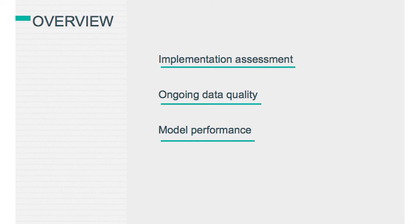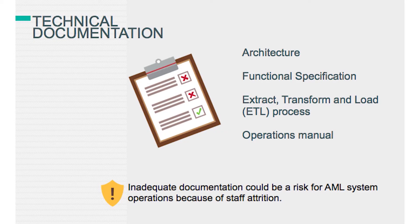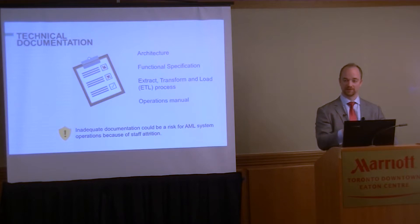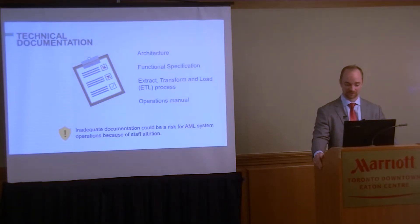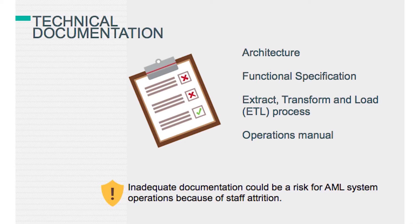The overview covers: implementation assessment — how your models were implemented; ongoing data quality, which is really important; model performance; and technical documentation. Documentation is critical, and as a compliance group, you should know not only the documentation your department has, but also what documentation your technology partners have, and whether any gaps in IT could create failures for compliance.